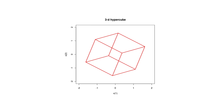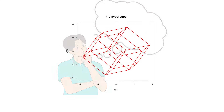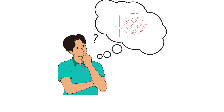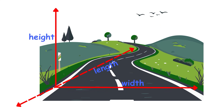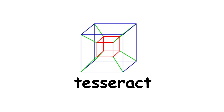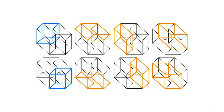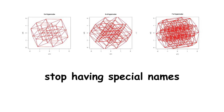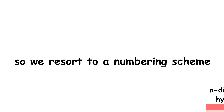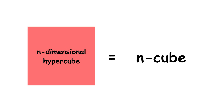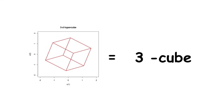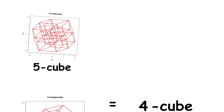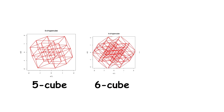After 3D, we can keep going into 4D space, though this is hard to visualize in a three-dimensional world. In 4D, we have the tesseract, bounded by eight cubes. Then after that, the hypercubes stop having special names, so we resort to a numbering scheme. An n-dimensional hypercube is called an n-cube. So the cube is a three-cube, the tesseract is a four-cube, then we have the five-cube, the six-cube, and so on toward infinity.